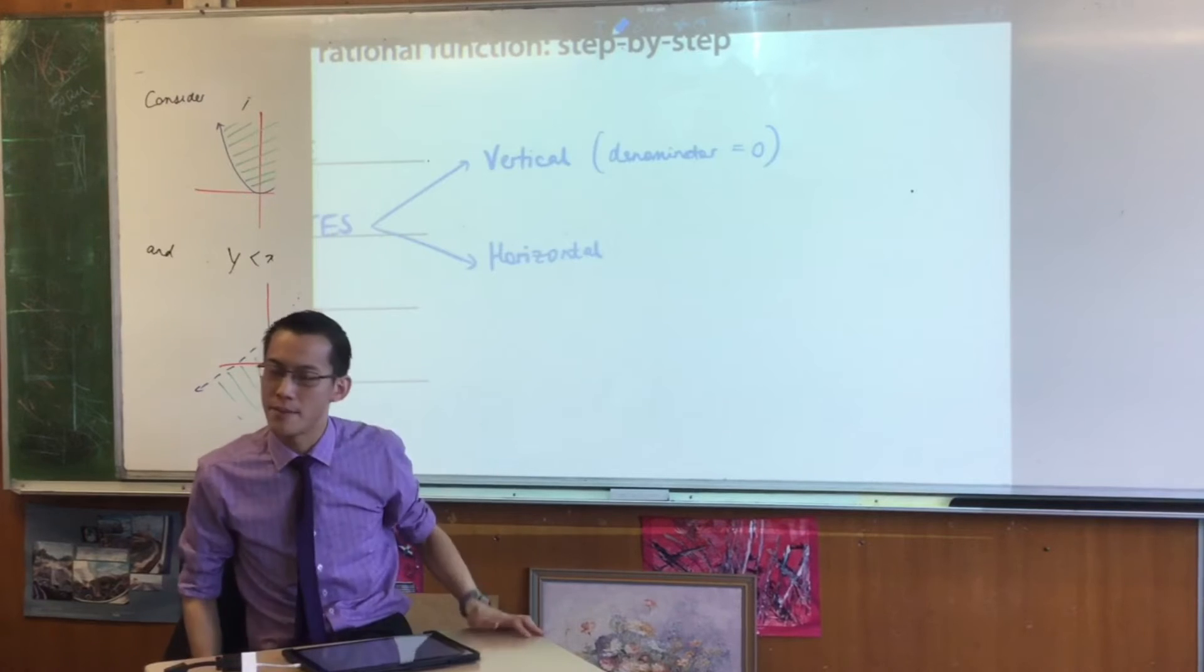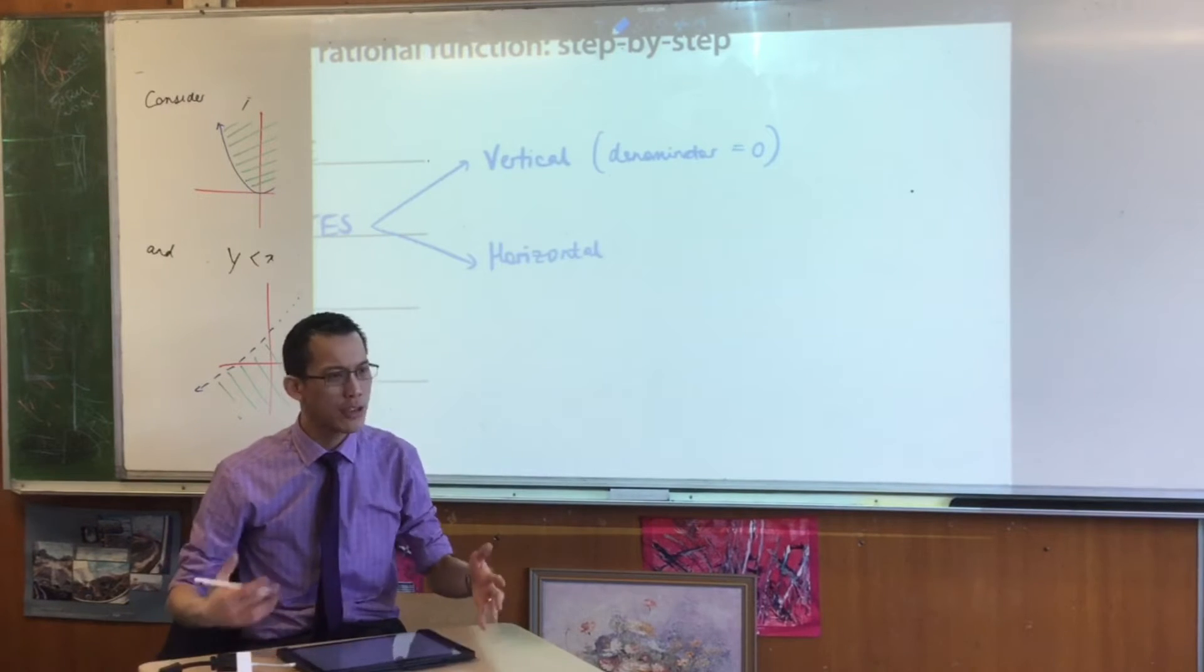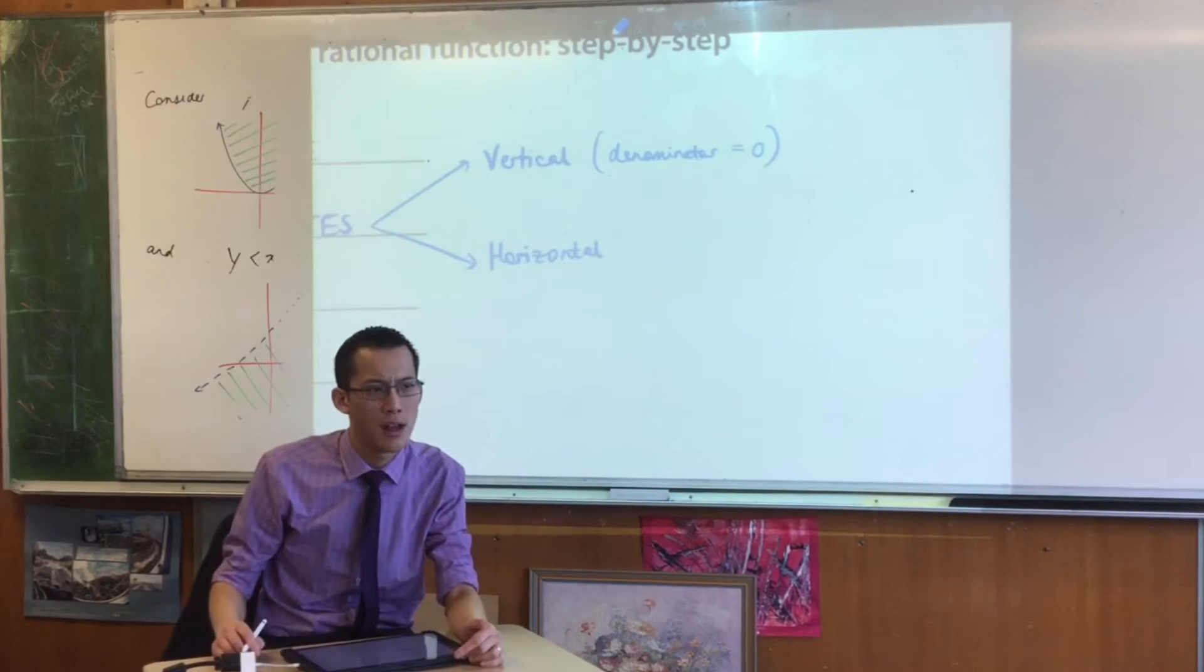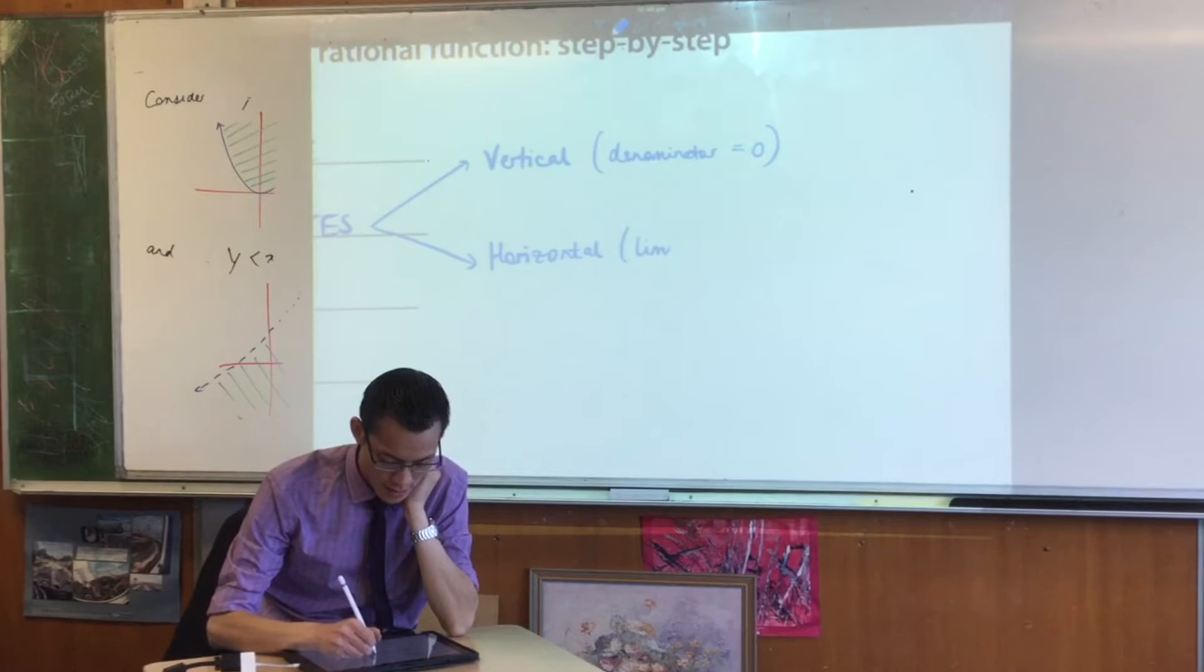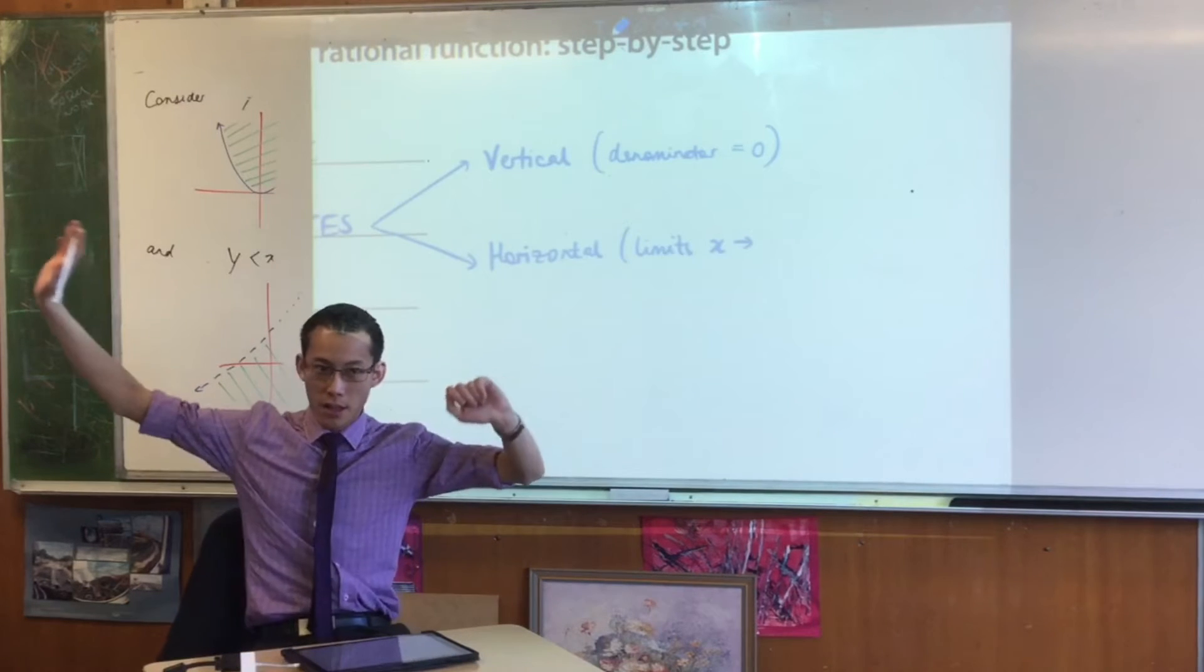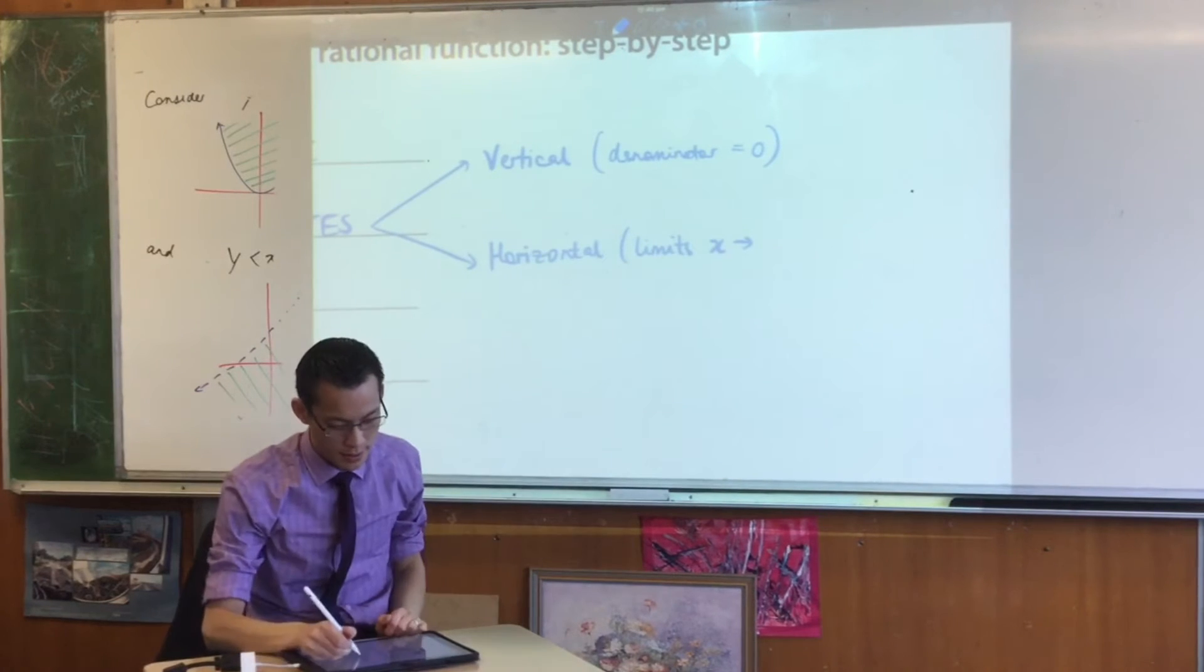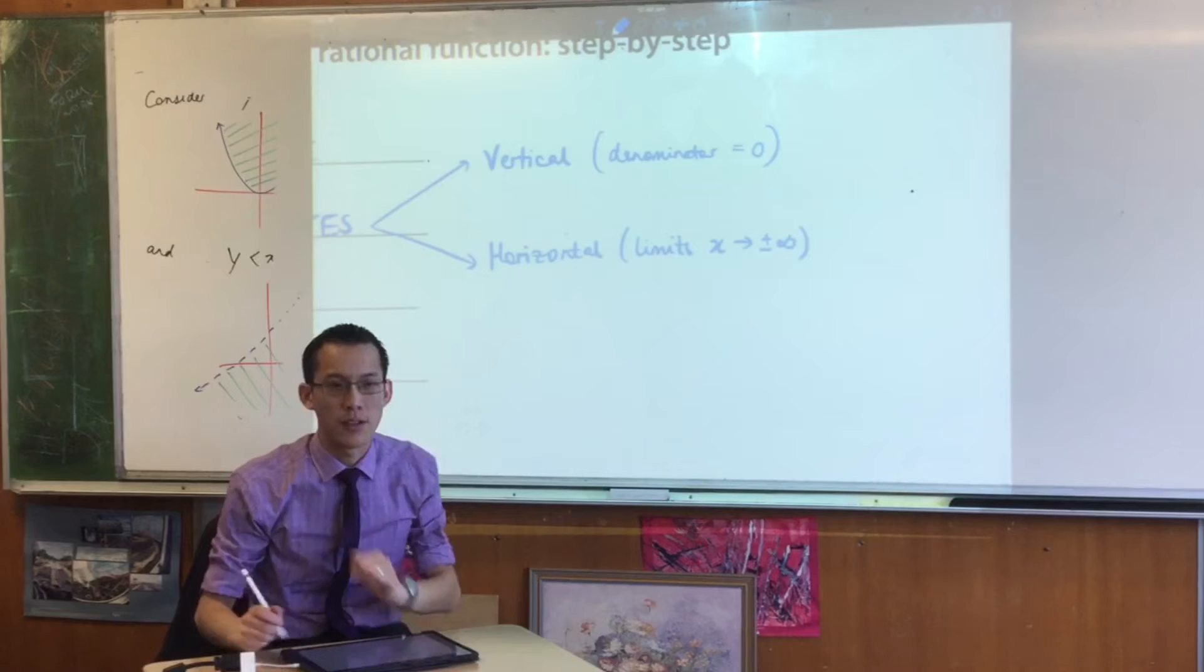Horizontal asymptotes like the one we had up above, y equals zero, where do you get them from? It's nothing to do with the denominator. They're limits. So you think about limits as x approaches positive and negative infinity.